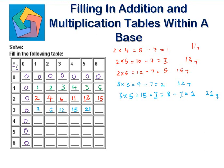3 times 6 is 18. 18 minus 7 is 11, and 11 minus 7 is 4, so this is 24 to the base 7.